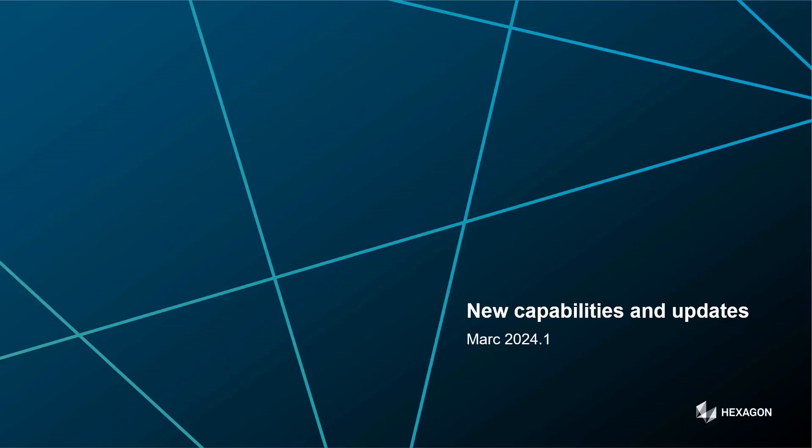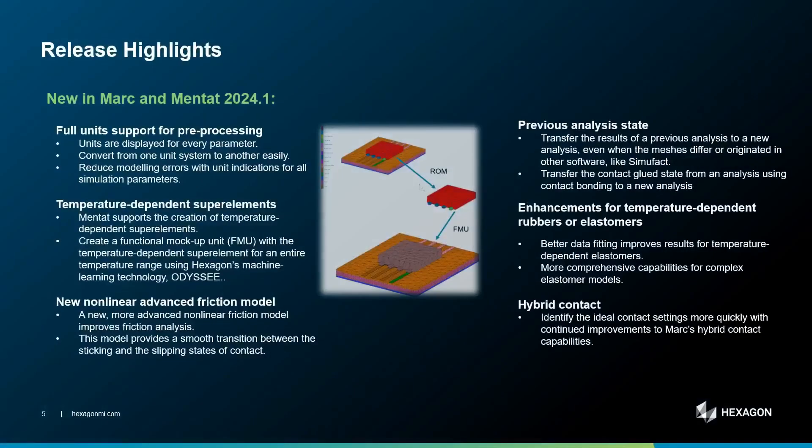So what is new for this 2024.1 release? Six major projects have been done. First of all, about the unit support for preprocessing. Second would be around temperature-dependent super elements. Then we'll talk about a new nonlinear advanced friction model. Then we'll talk about improvements for previous analysis states. We'll talk also about enhancements associated with temperature dependencies for rubbers or elastomers. And finally, enhancements around contact robustness and especially the hybrid formulation.